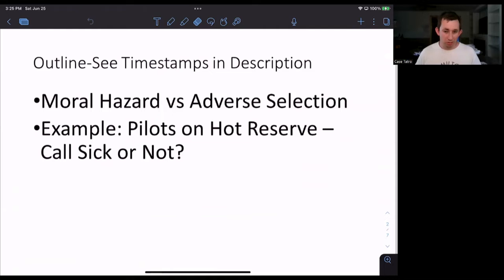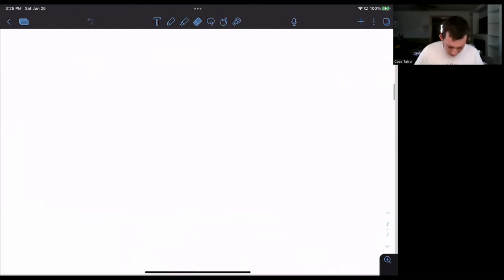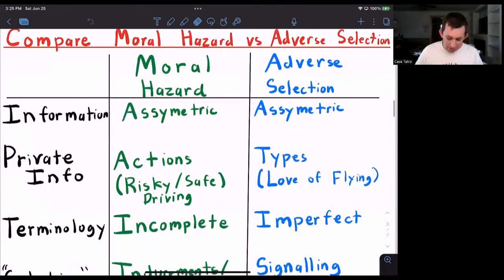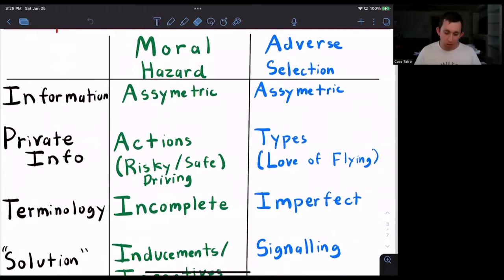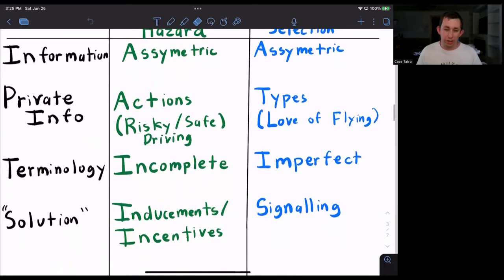Timestamps are below if you'd like to jump around, but let's quickly review this table about moral hazard versus adverse selection. With moral hazard, we're talking about actions. We don't know if someone who wants insurance is a risky or safe driver, or if they'll drive more risky or more safely after getting insurance. So we have incomplete information compared to imperfect information under adverse selection.